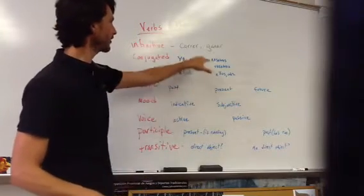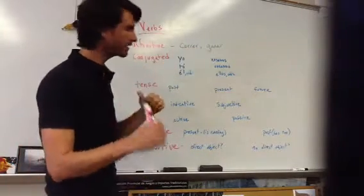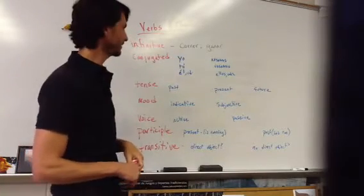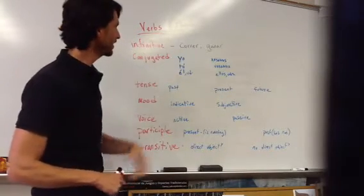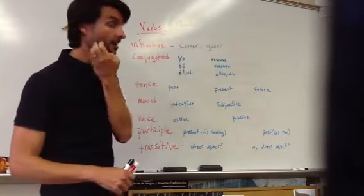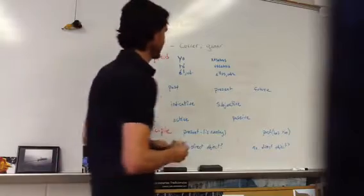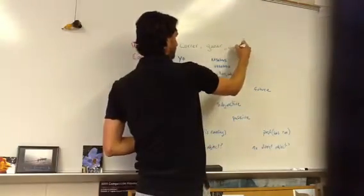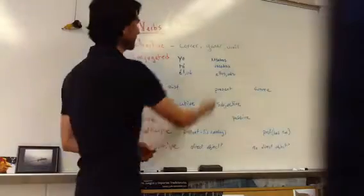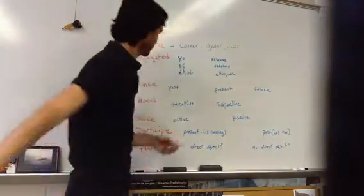So we'll have a verb like correr, to run, o ganar, to win. This is an ER verb, this is an AR verb. We also have IR verbs like vivir, también. So these are infinitive forms of ER, AR, and IR verbs.